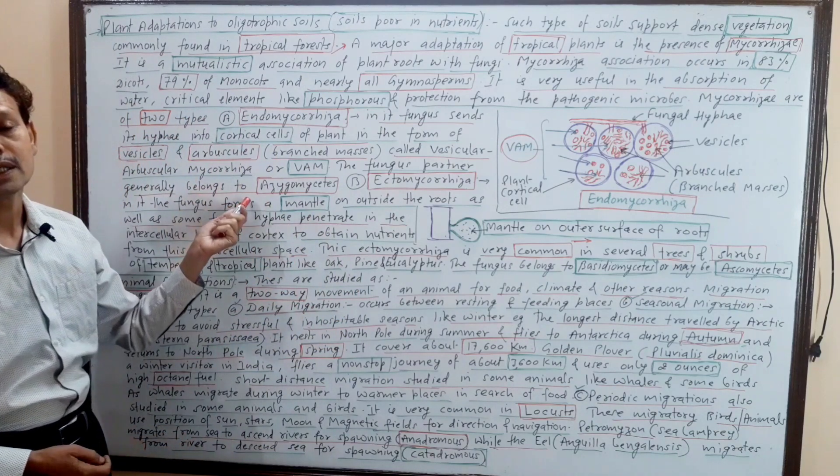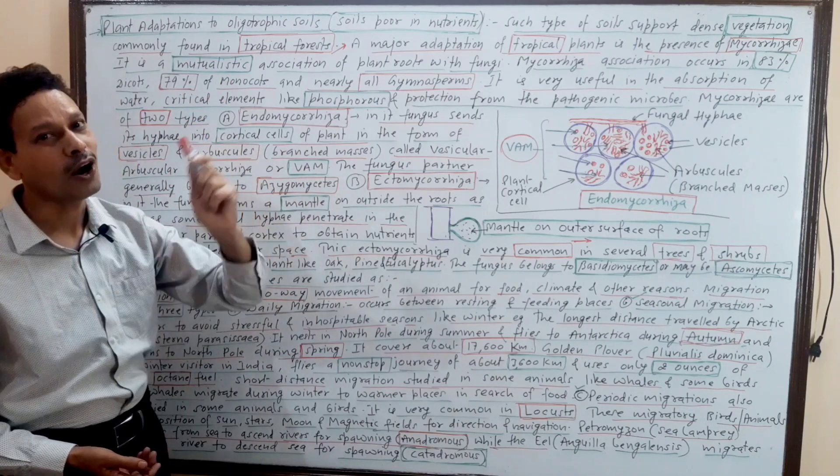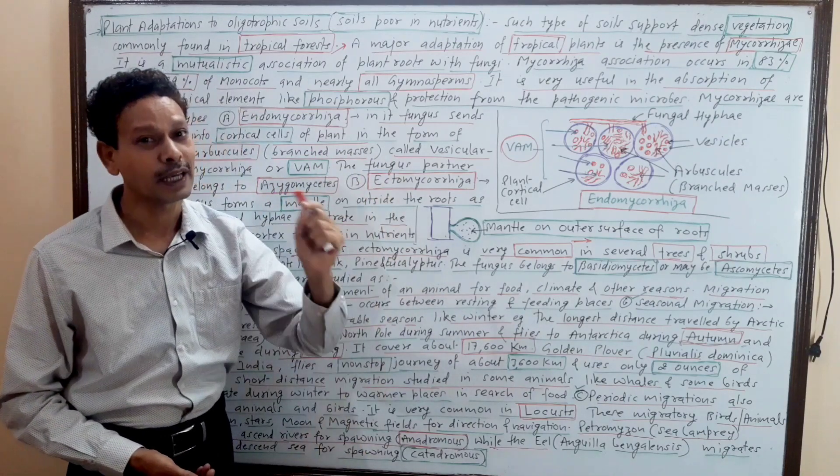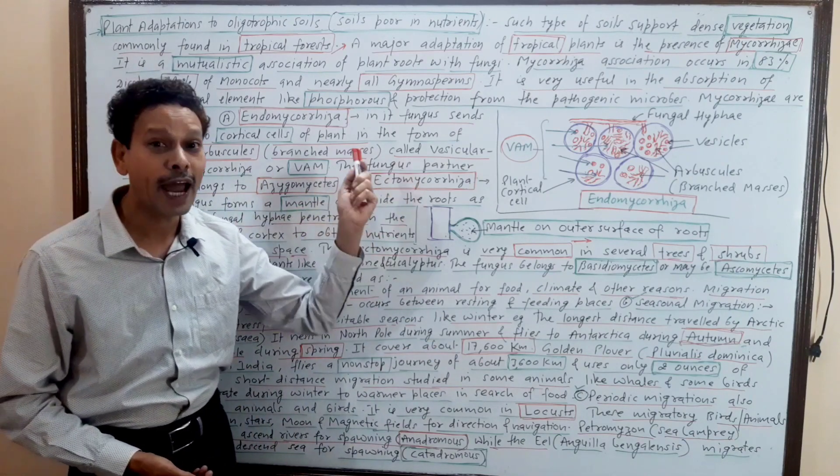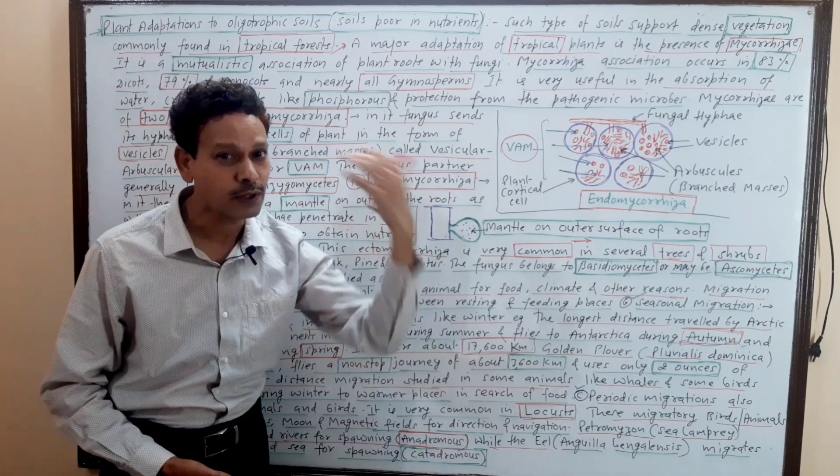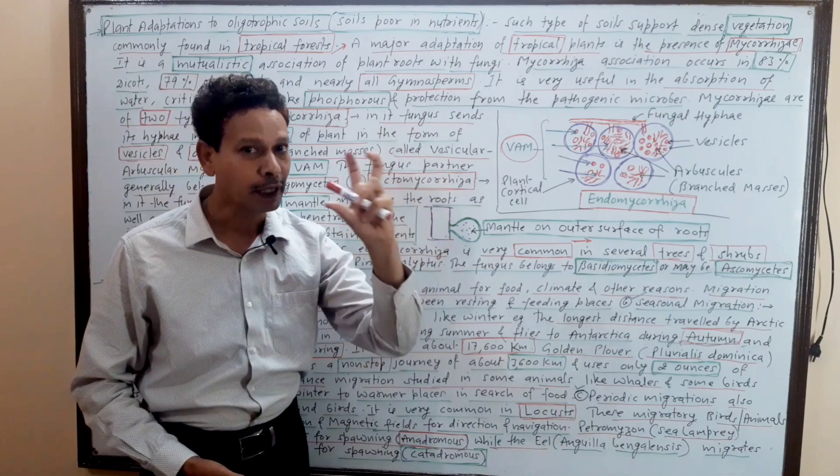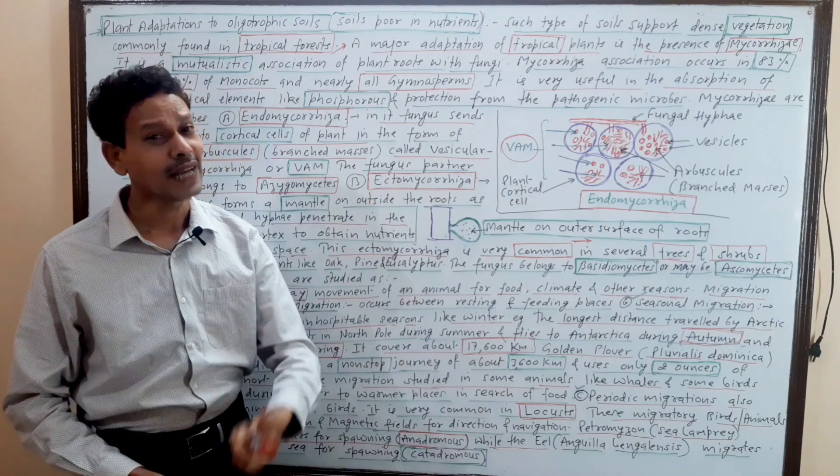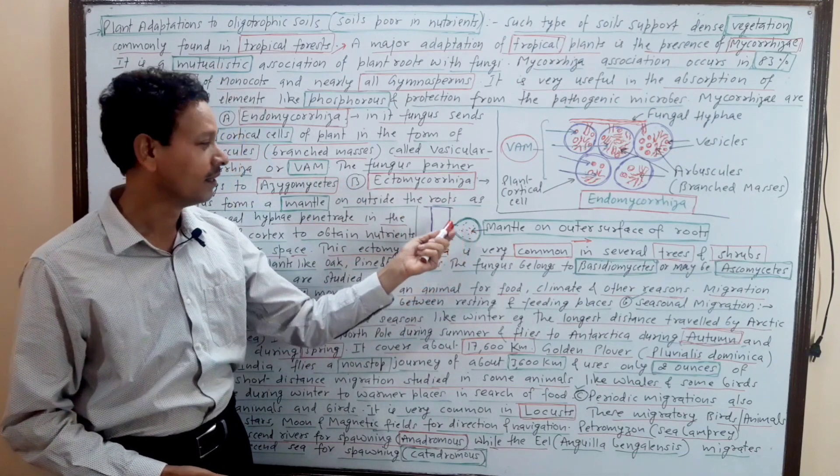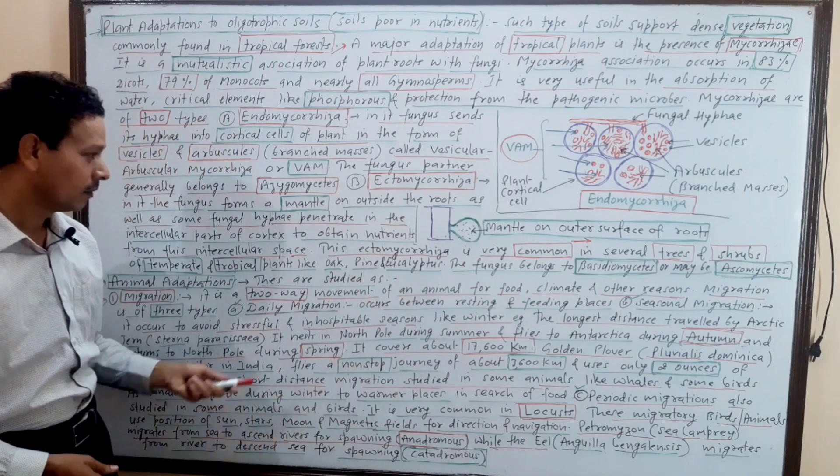The fungus partner, AIMS students note this - the fungal partner belongs to Zygomycetes. I will discuss this in kingdom fungi. In case of ectomycorrhizae, the name indicates very clear - ectomycorrhizae means the fungus associates with plant roots on outer surfaces and it produces outer surface growth. That is, it is a mantle.